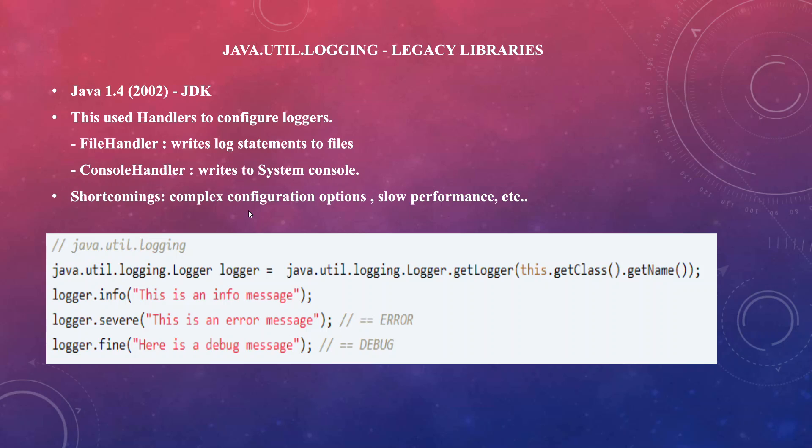JUL came with the concept of handlers to configure loggers — for example, file handlers to write logging statements to files and console handlers to write to the system console. The main disadvantages of JUL were the complexity involved in configuring loggers and also poor performance. The method names were also inconsistent — for example, 'severe' for error messages and 'fine' for debug messages.